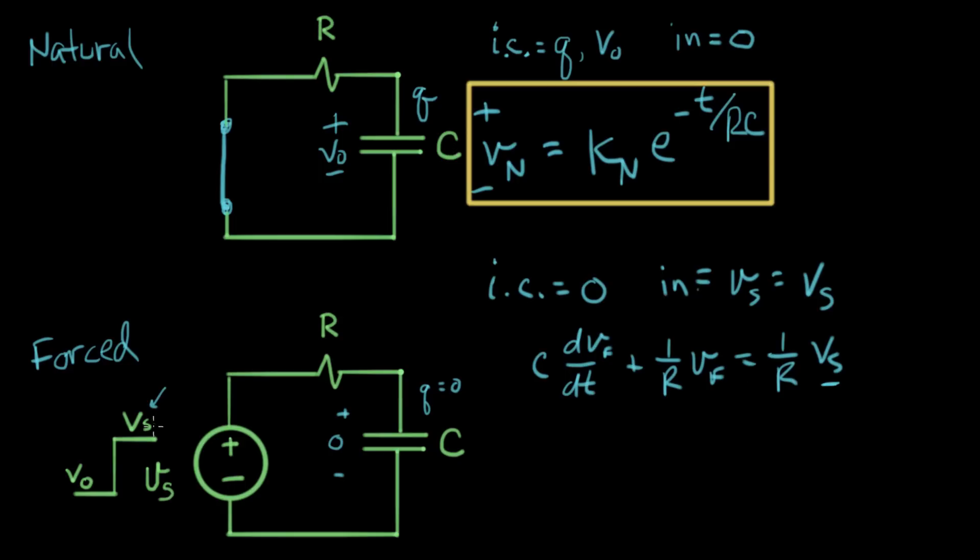So, a good guess is going to be some function that looks like VS. And VS looks like what? VS looks like, over here, VS looks like a constant. So, we're going to make a guess here that the forced response looks like some constant. And we'll call that KF.